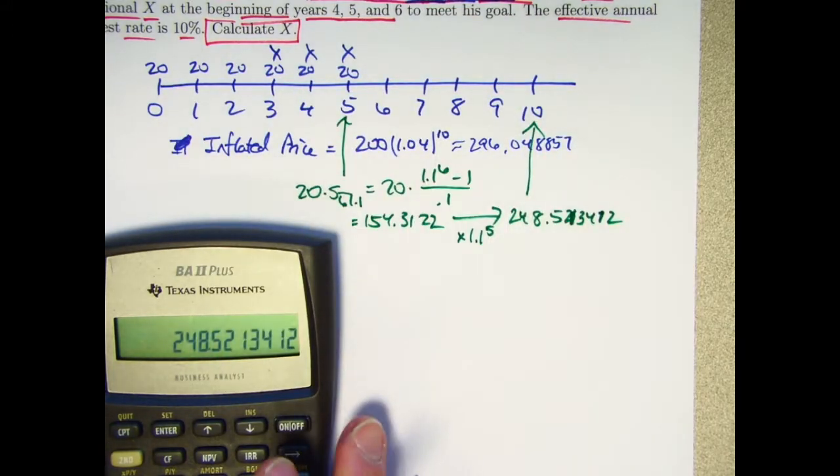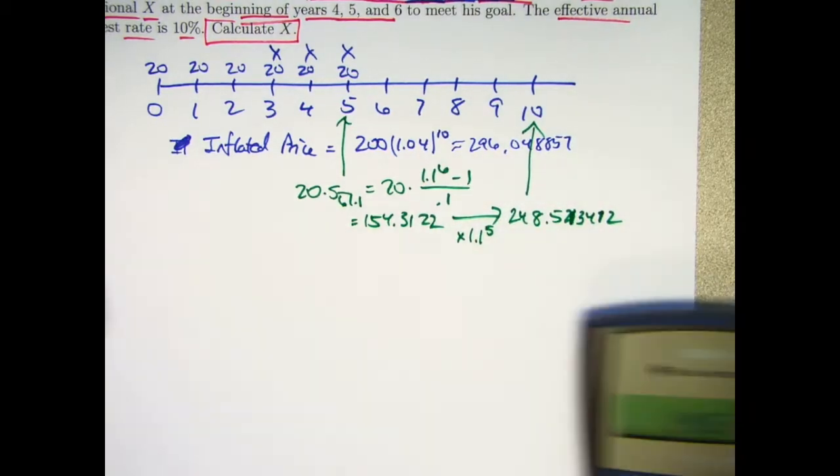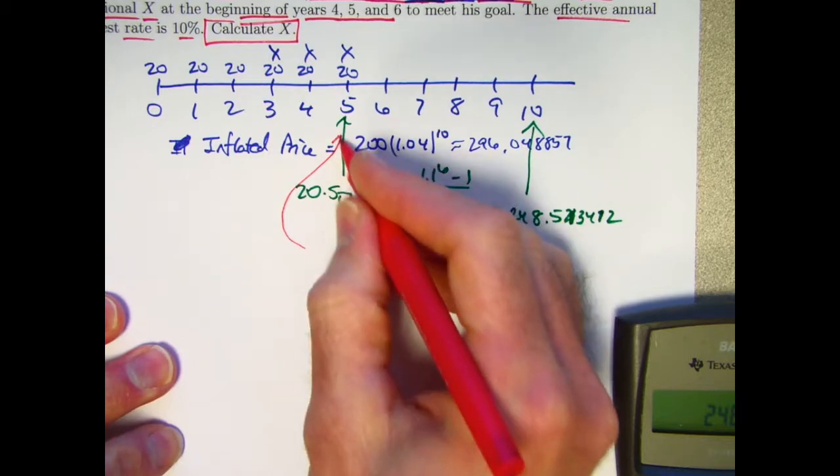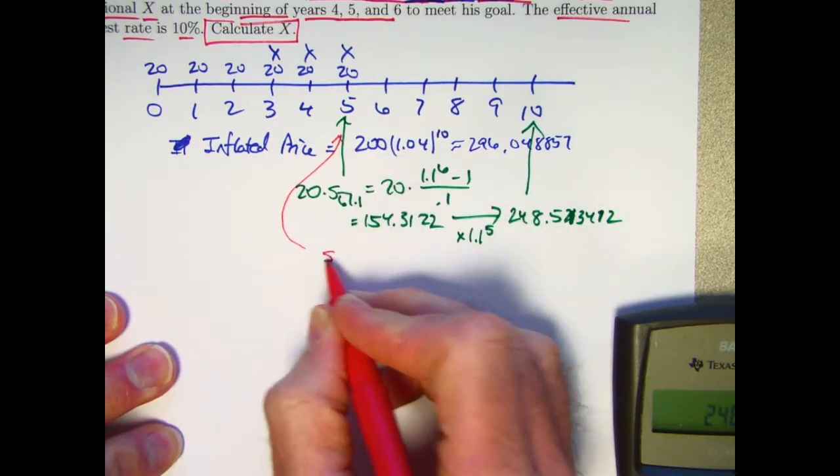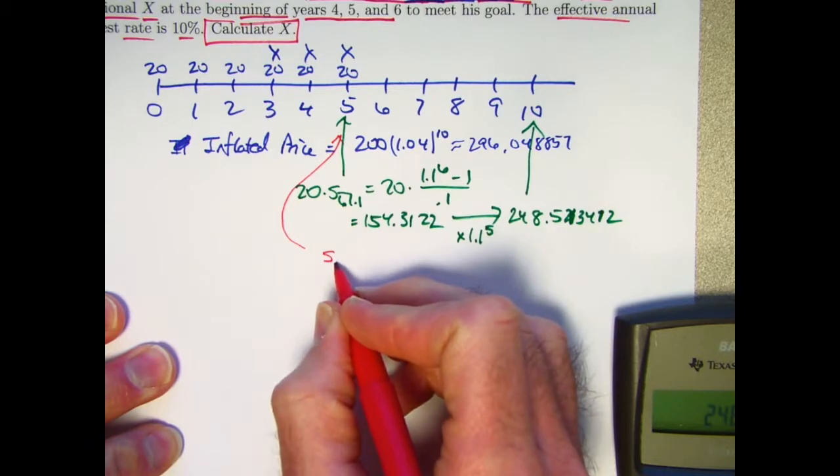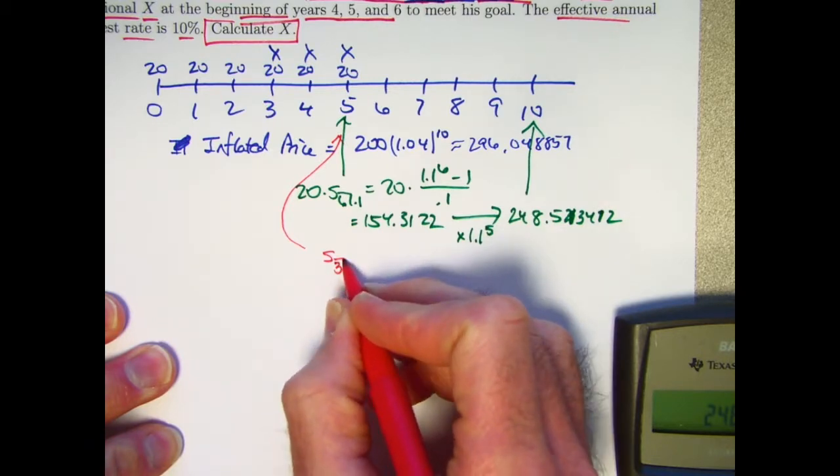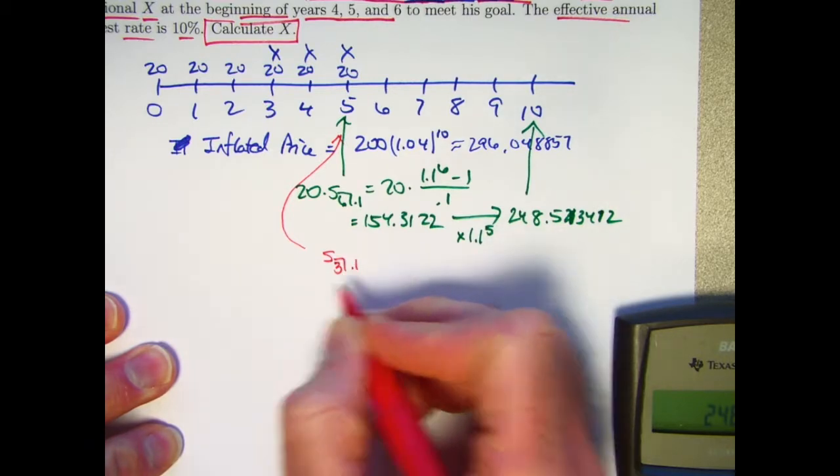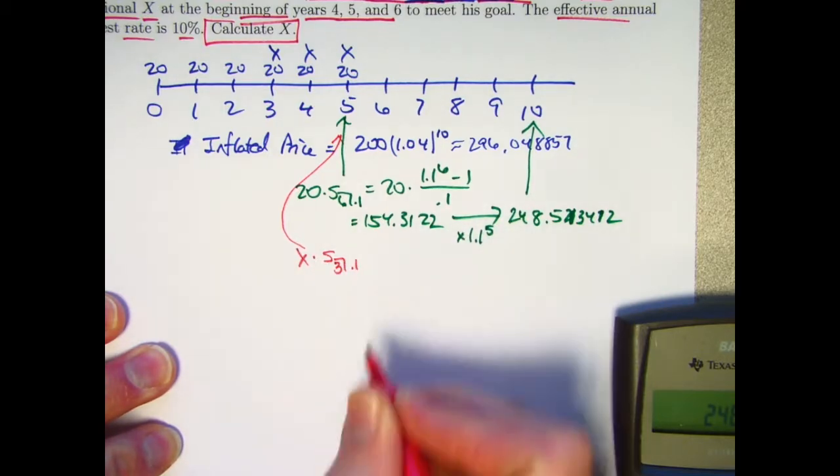What about the x's? At time 5, again, if I think in terms of annuity immediates, evaluate that future value immediately after the last deposit. It's three payments, still a 0.1 interest rate. Well, those payments are of x amount.